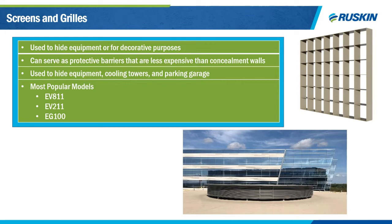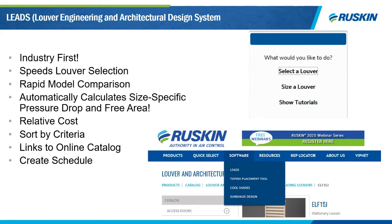With all of the louver options available for your building specifications, sometimes it's still hard to know which one to choose. So Ruskin has an application on its website that will offer you further assistance. This is our LEADS program — Louver Engineering and Architectural Design System. It's an industry first in terms of louver selection and rapid model comparison, providing size-specific pressure drop and free area information that you won't find on the product data submittal sheet, along with relative costs — all based on the criteria that you enter into the program.